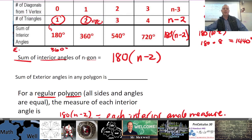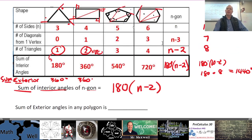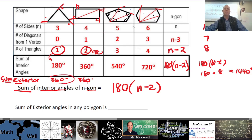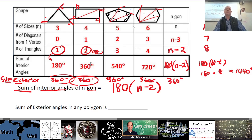The sum of the exterior angles is 360 degrees. It makes sense: if the number of angles increases but the size of each angle decreases, the total remains consistent. Indeed, the sum of the exterior angles is always 360 degrees, regardless of the number of sides.